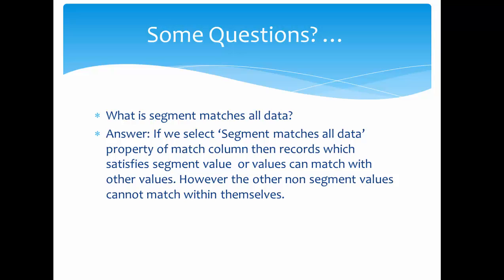In the segment matches all data, you have configured US and Canada. Suppose there are two person records — Mike Paul in Canada and Mike Paul in US. Those records will match with each other and create a matching record. But if there is the same person name, like Mike Paul in UK, the US and Canada Mike Paul record will try to match with the UK record. But as it is not part of the segment matching data, it will not match.